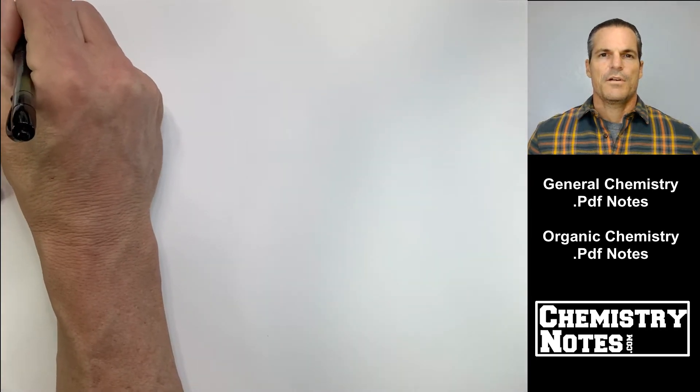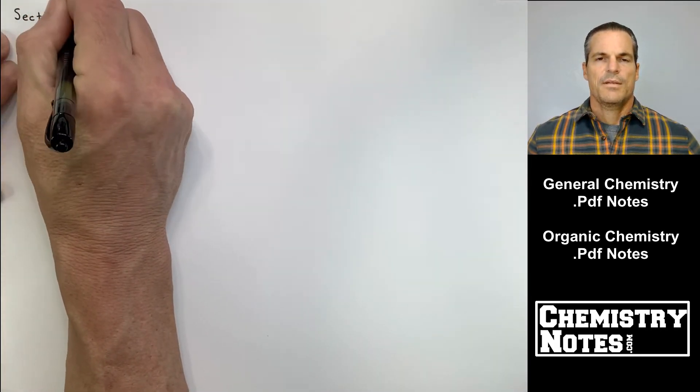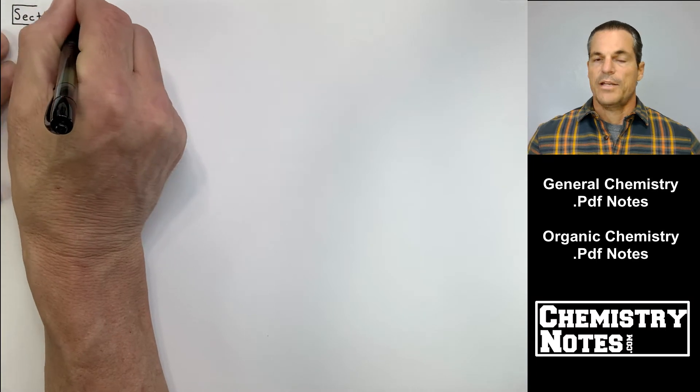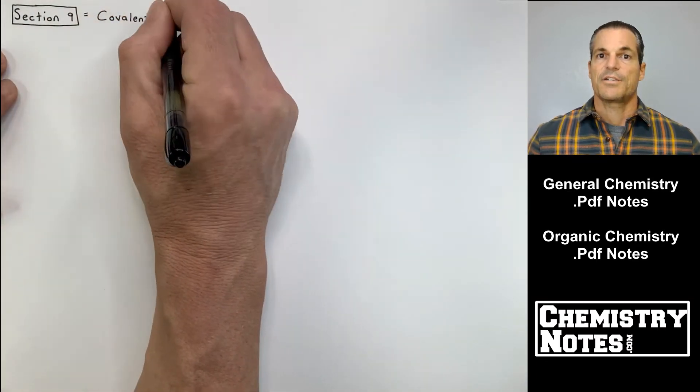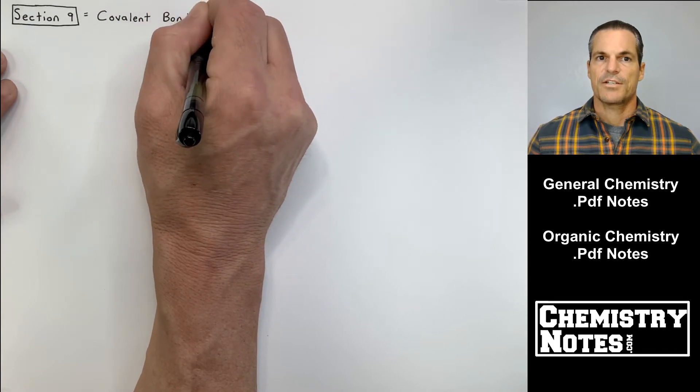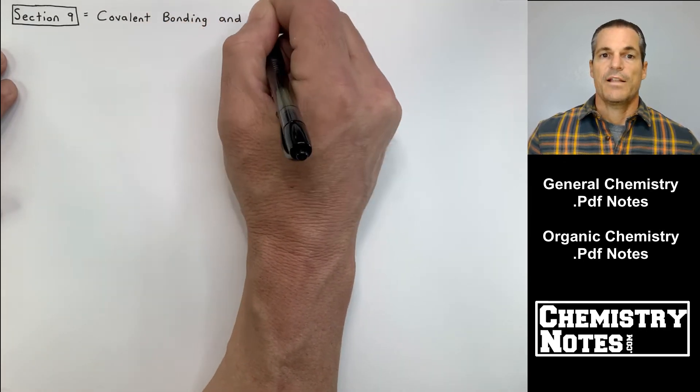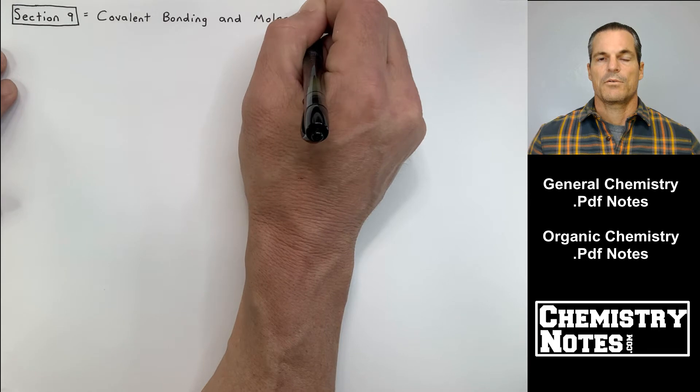Hi everybody, Justin here from chemistrynotes.com and this is a brand new section we're starting. It's kind of like a brand new chapter, so this is section 9 and it's covalent bonding and molecular orbitals.